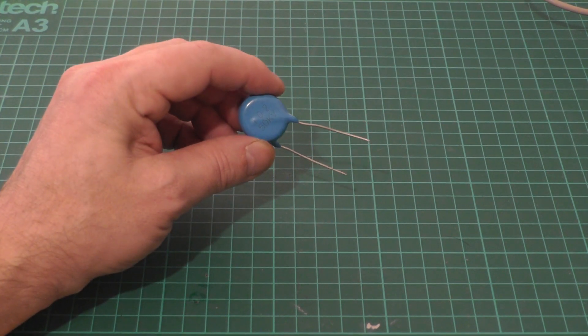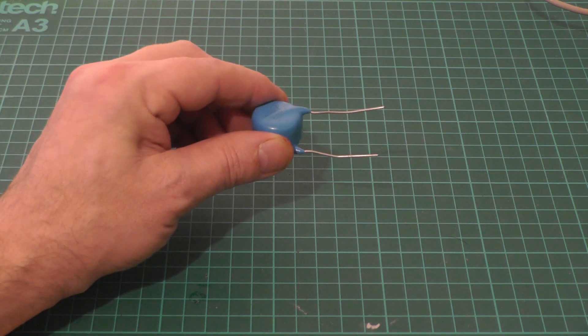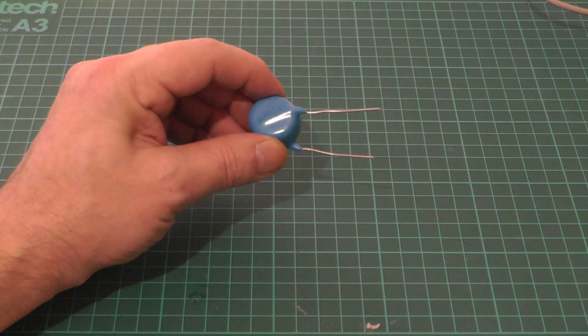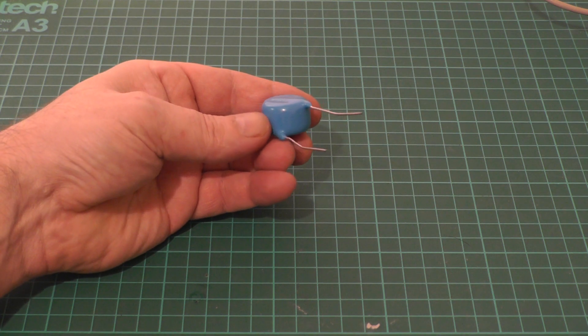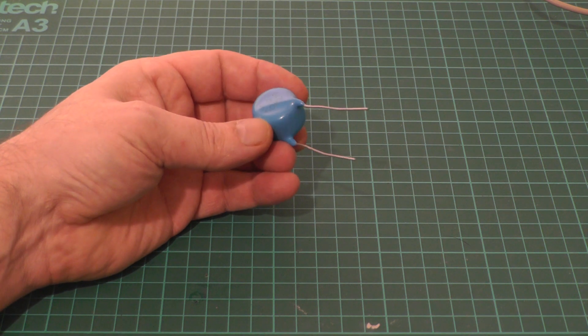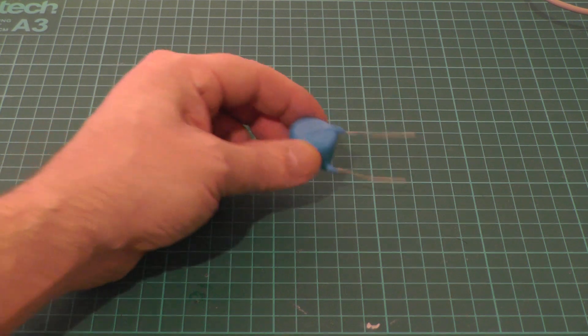So this is a high voltage wire ended capacitor, about a thousand picofarads at fifty thousand volts. Obviously this won't stand off fifty thousand volts because it will flash over between the leads, as we saw in a previous video where I substituted one of these for a doorknob capacitor.